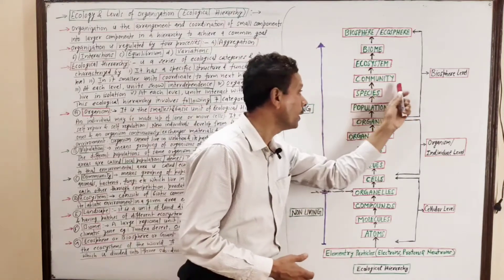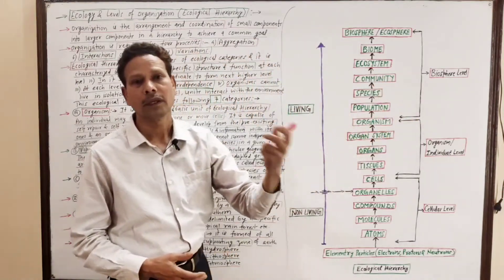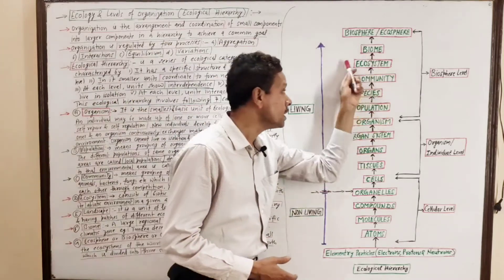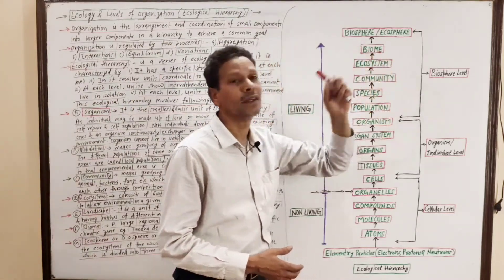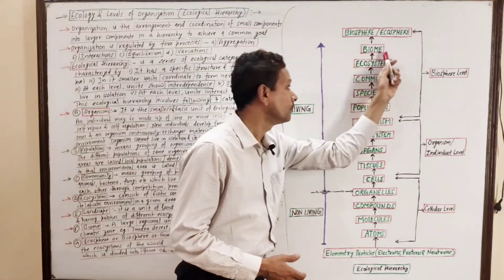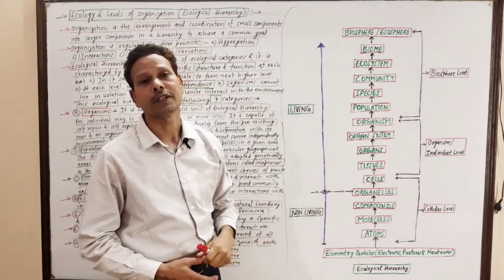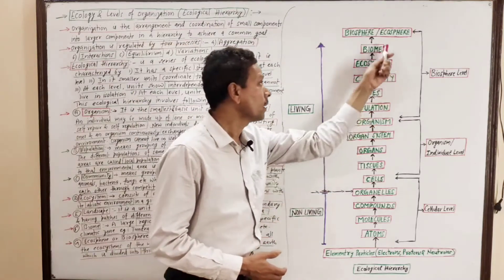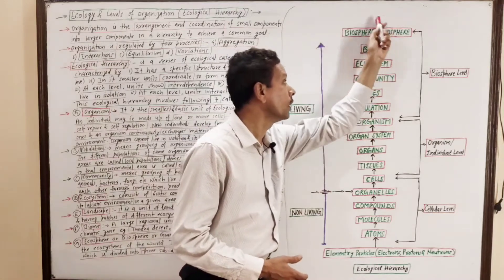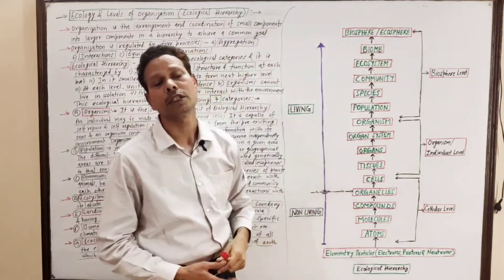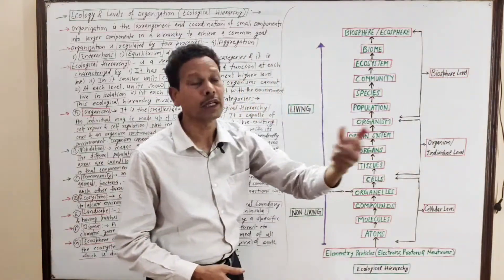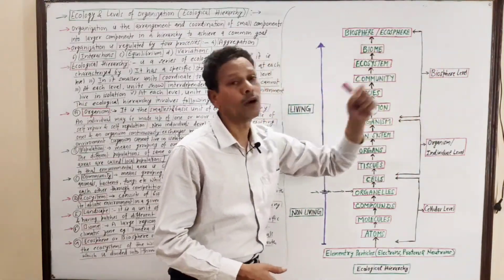Different biotic communities found in a particular geographical area — like a pond — interact with environmental factors, and together they constitute an ecosystem. The major ecosystem is called a biome. All biomes collectively constitute the biosphere, or ecosphere. This is the biosphere — ecosphere — level of organization.